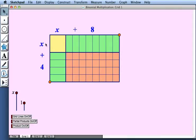So if we look at the product of x plus 4 times x plus 8 we can see that it's x squared plus 8x plus 4x plus 32, 4 times 8.